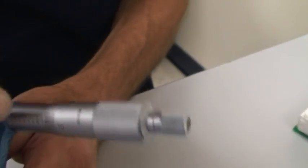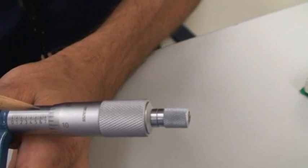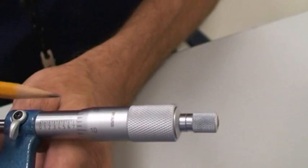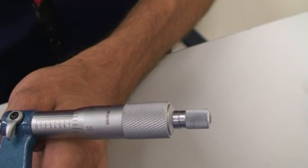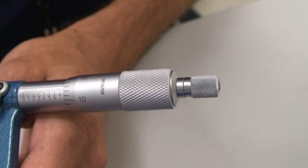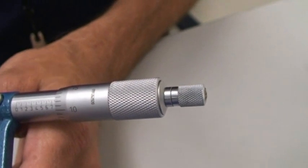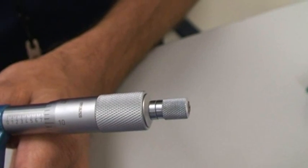Now for my hundredths and thousandths, each line past the tenth represents .025 increments. As I can see, I see two visible lines, but yet not a third. So I'm at least at .050, but not quite .075.